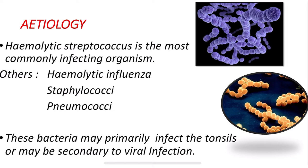Hemolytic streptococcus is the most commonly infecting organism, producing tonsillitis. Other contributing bacteria include hemolytic influenza, staphylococci, and pneumococci. These bacteria may primarily infect the tonsil directly, or it may be secondary to viral infection — first the virus acts, and then these bacteria produce tonsillitis.